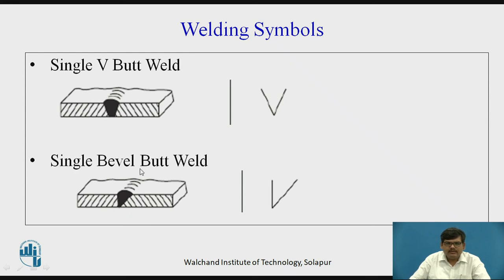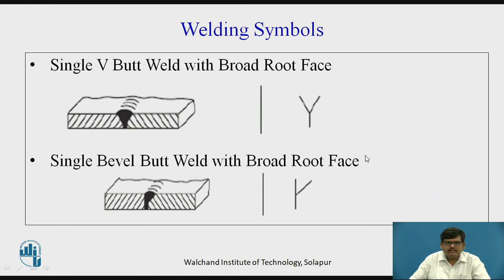Then we have single bevel butt weld — here only a V butt weld with a slight inclination to the line. Then we have single V butt weld with broad root face, where a broader root area is given and an additional line is included in the symbol. Similarly, there is single bevel butt weld with broad root face.